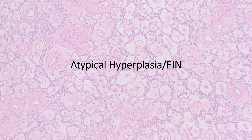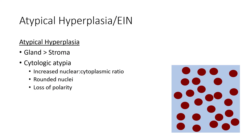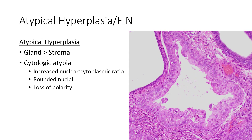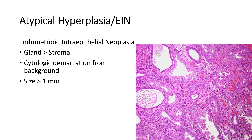Let's move on now to atypical hyperplasia, or EIN. I'll define each separately, starting with atypical hyperplasia. Here you have, again, a greater amount of endometrial glands and stroma, and then you have cytologic atypia — increased nuclear-to-cytoplasmic ratio, rounding up, and loss of polarity in some nuclei. You can see some nuclei are no longer basally oriented but are getting up toward the lumen of the gland. Next, endometrioid intraepithelial neoplasia, or EIN.